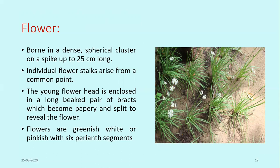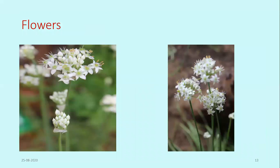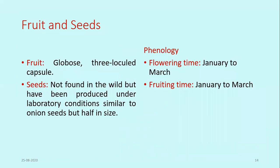The younger flower head is enclosed in a long beaked pair of bracts, which become papery and split to reveal the flowers. Flowers are whitish, greenish-white, or sometimes pinkish in color, found in bunches, clearly visible in images. The fruit is very small and globose with three locules, forming a capsule.